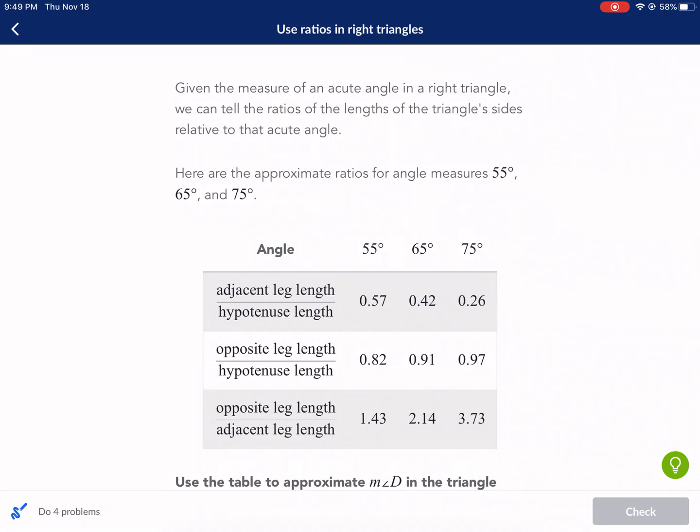Hi everyone, this is Mr. West. Today we're doing a Khan Academy tutorial on use ratios in right triangles. This was requested by YouTube Studio, a commenter. He's been here a couple times, keeping me in business with all these requests, but I appreciate it.